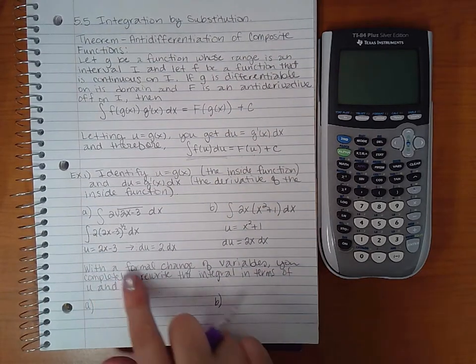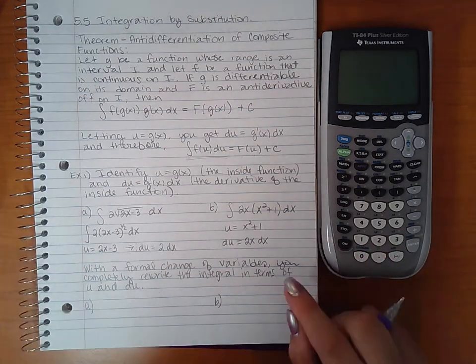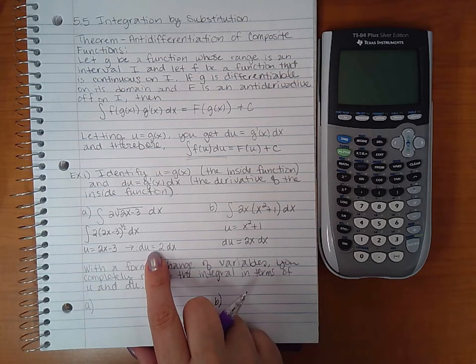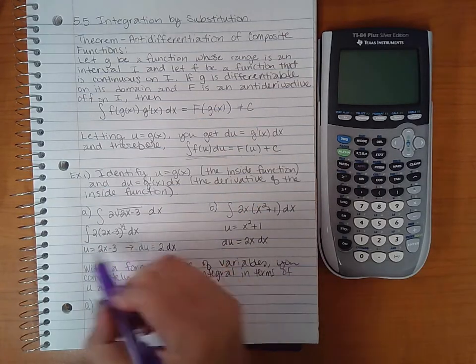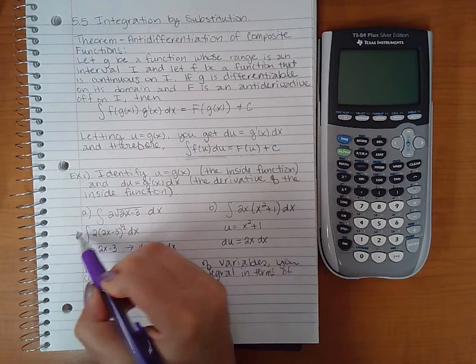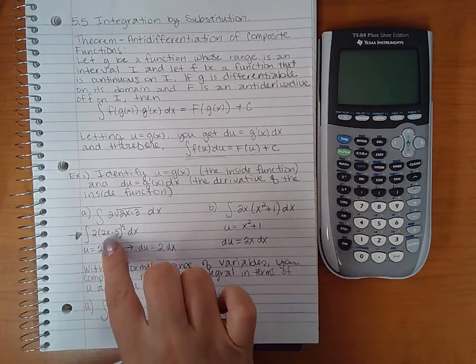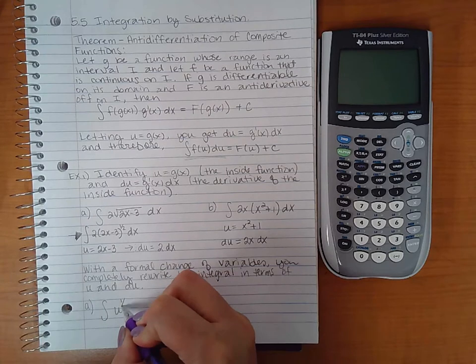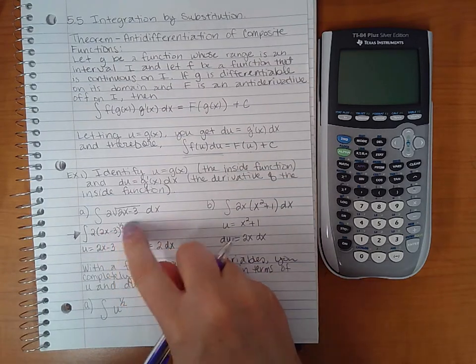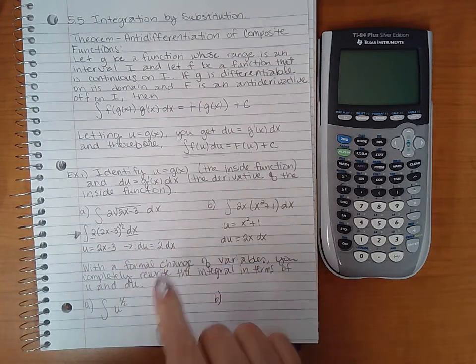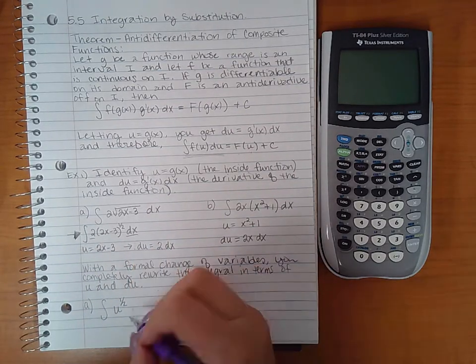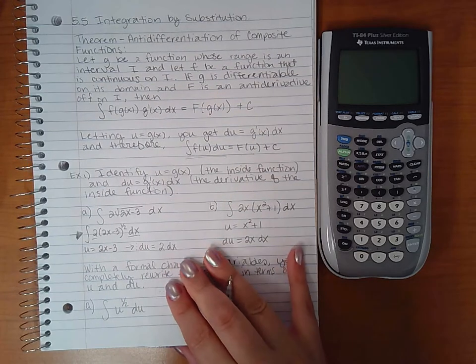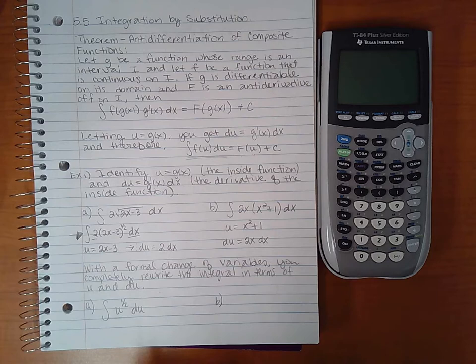So there we've got the parts there. Now in this second part of the problem, it says with a formal change of variables, basically substitute - you completely rewrite the integral in terms of u and du. So since I know what u is and I know what du is, I'm just going to substitute. If I look at this one here, the one that I had rewritten, what ends up happening is that inside the parentheses the 2x minus 3 becomes a u. So that becomes u to the 1 half. This is u with a power of 1 half. Now the 2 and the dx, that becomes du, and so I have this expression here.